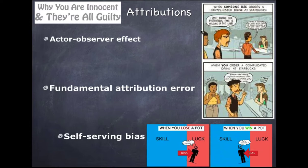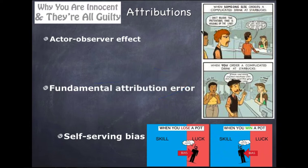The fundamental attribution error is the tendency to attribute others' behavior as dispositional. It's fundamental because they are just as much an individual as you are — they too may have situational reasons. Having a self-serving bias is something we're all probably familiar with: the tendency to attribute our successes to dispositional causes — 'It's because I'm just great' — and our failures to situational ones. Athletes, for example, attribute success to skill and failure to poor officiating.